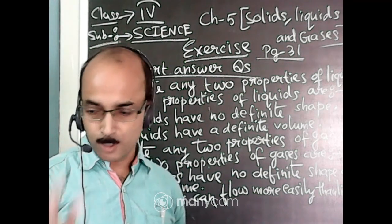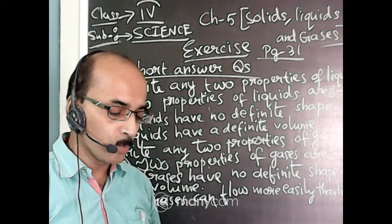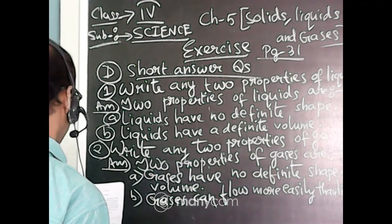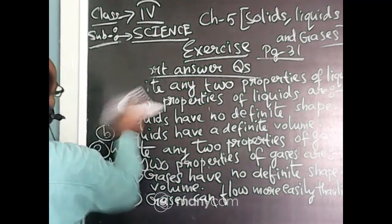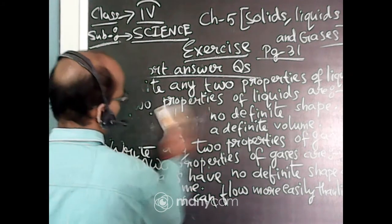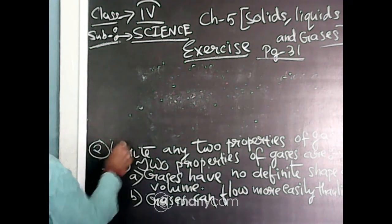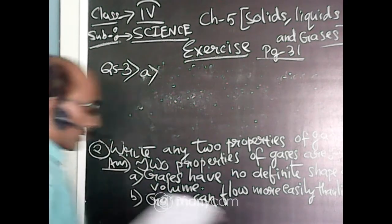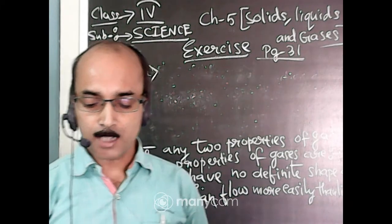Question number three is a value-based question in the value corner. I'll write it on the board now. The statement is: Aditi's housemate doesn't have a refrigerator.